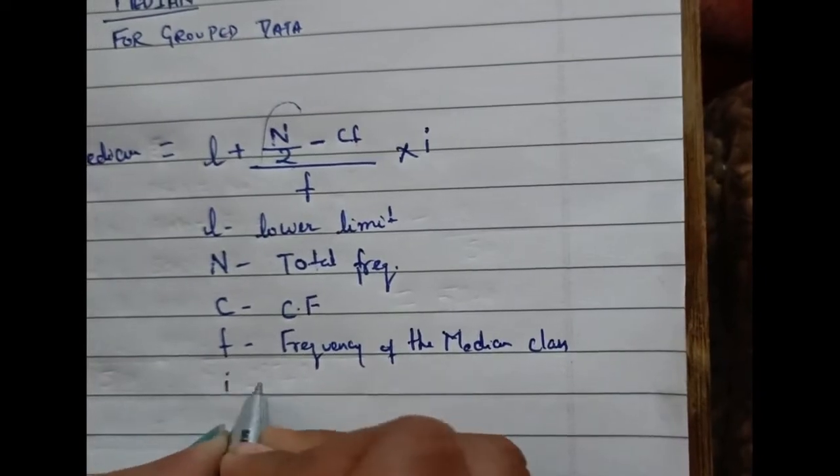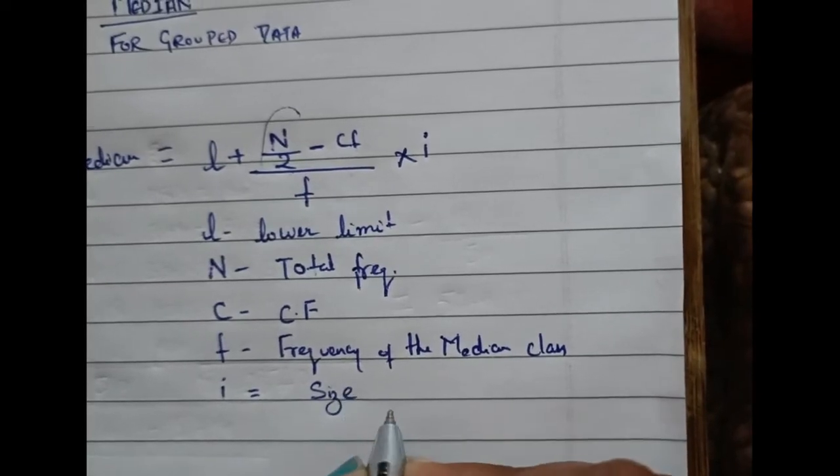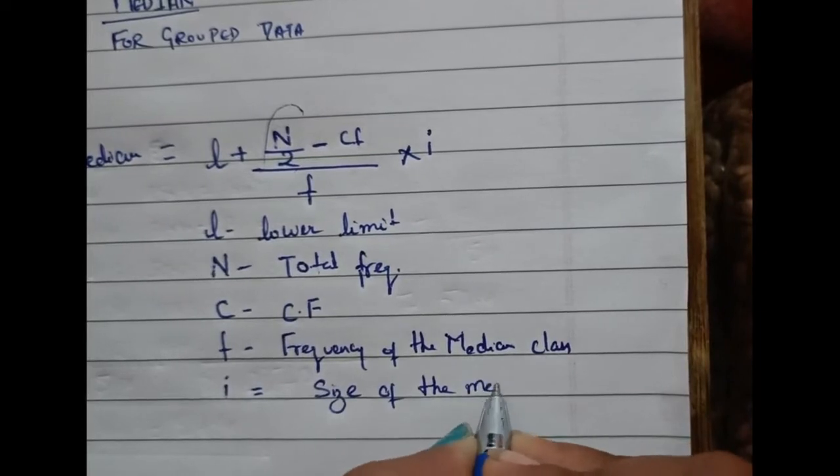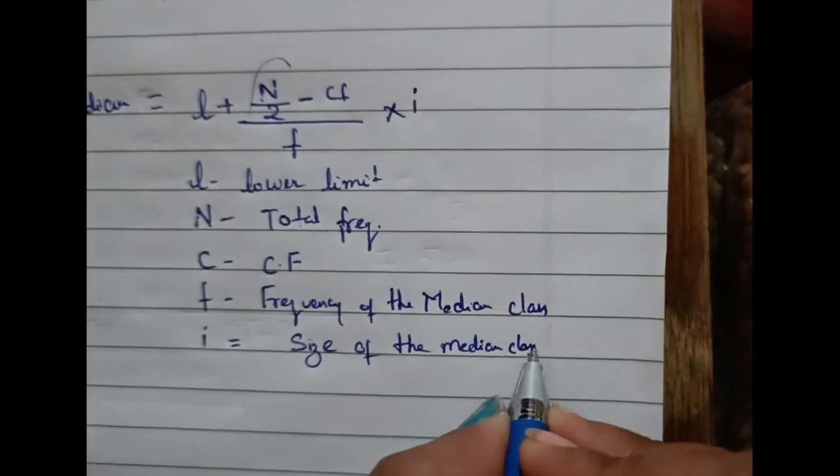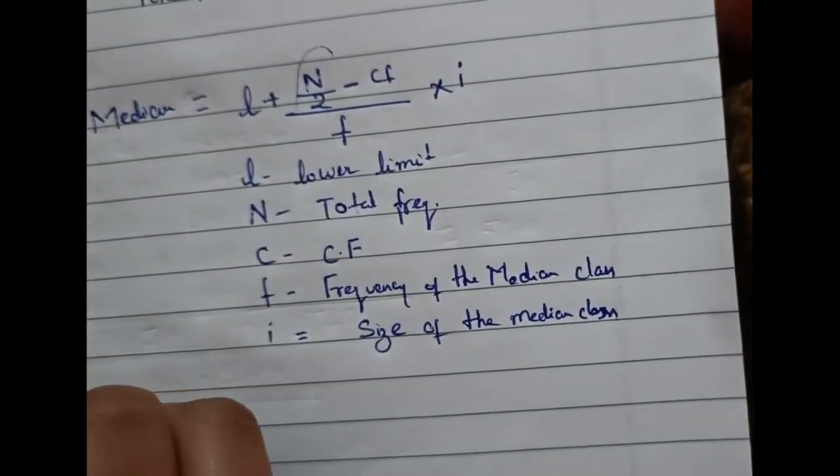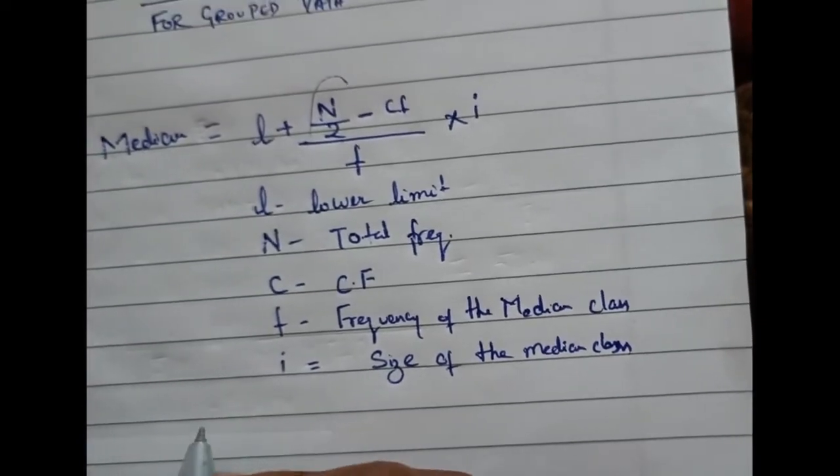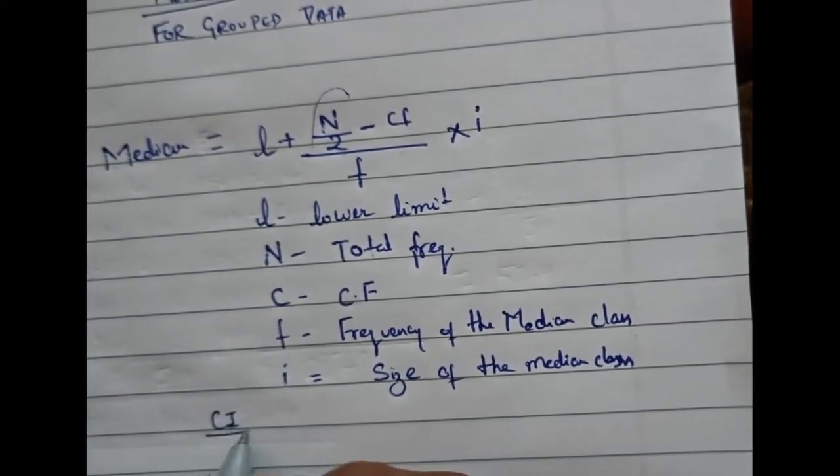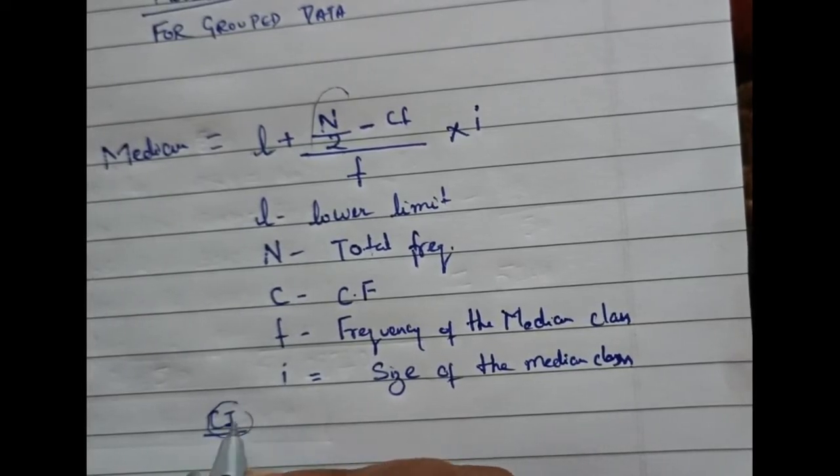Then is I. I will be the size of the median class. How will you calculate this I? What we'll be doing in the question—the question will contain class intervals. In our previous lectures, we have seen how mean has been calculated for certain class intervals, where we did sigma fi xi upon sigma fi for calculating the mean of these class intervals.